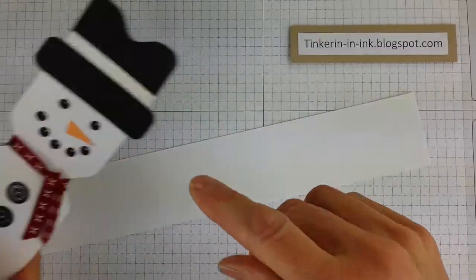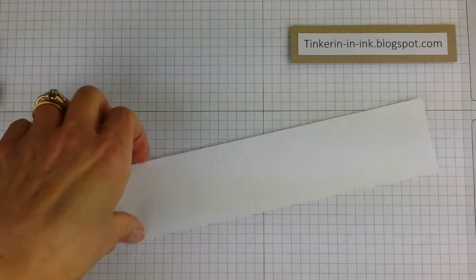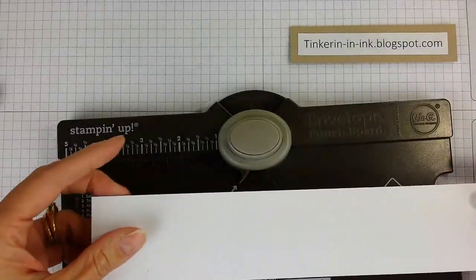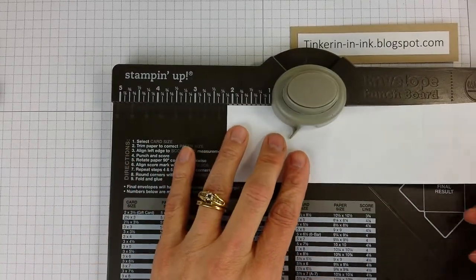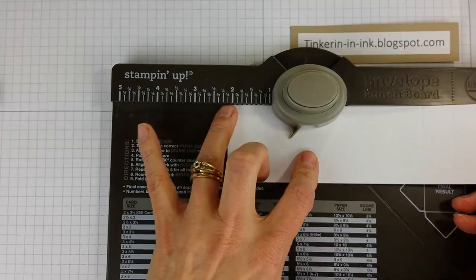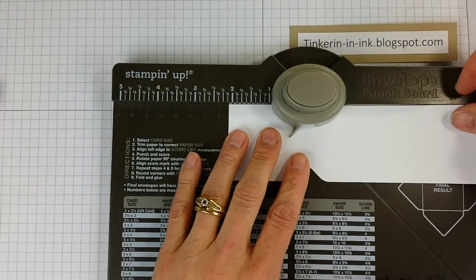And then the cute little notches here are created with the envelope punch board. How clever is that? So we're going to take this and we're going to go 2 and 1 eighths from each end and punch on both sides.